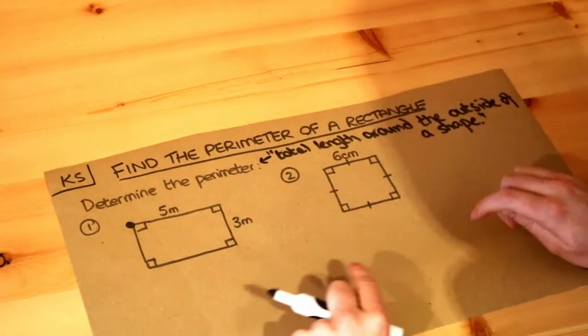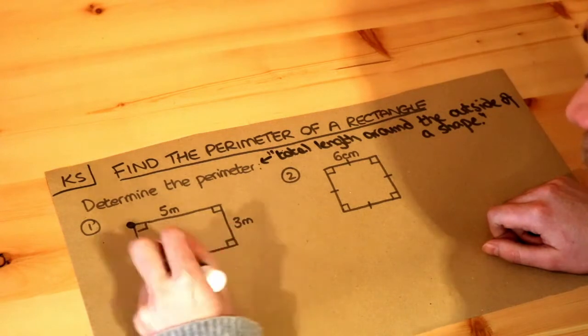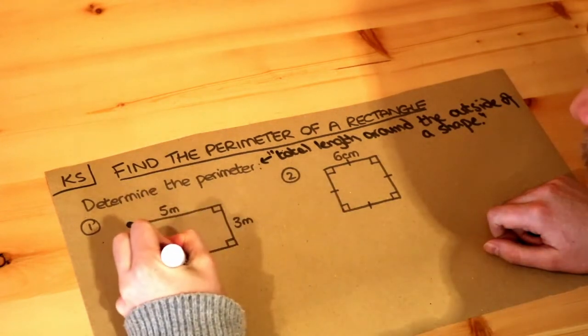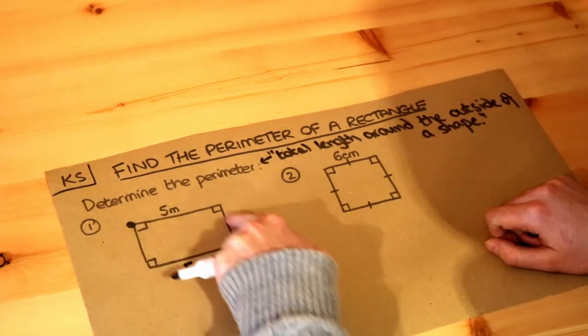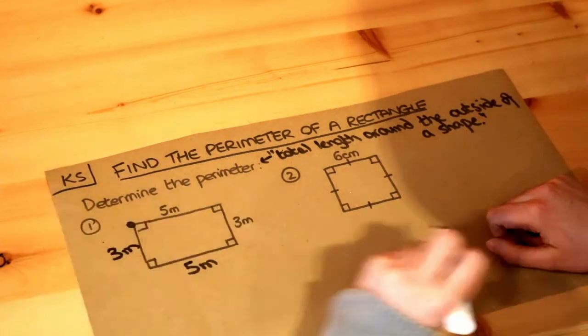Now if we think about a rectangle, if the top side is 5 meters, then the bottom side would be the same, because opposite sides of a rectangle are equal in length. So I'm going to put the 5 meters there, just copy it there. And if the right side is 3 meters, well the left side is also going to be 3 meters, because opposite sides are equal in length.